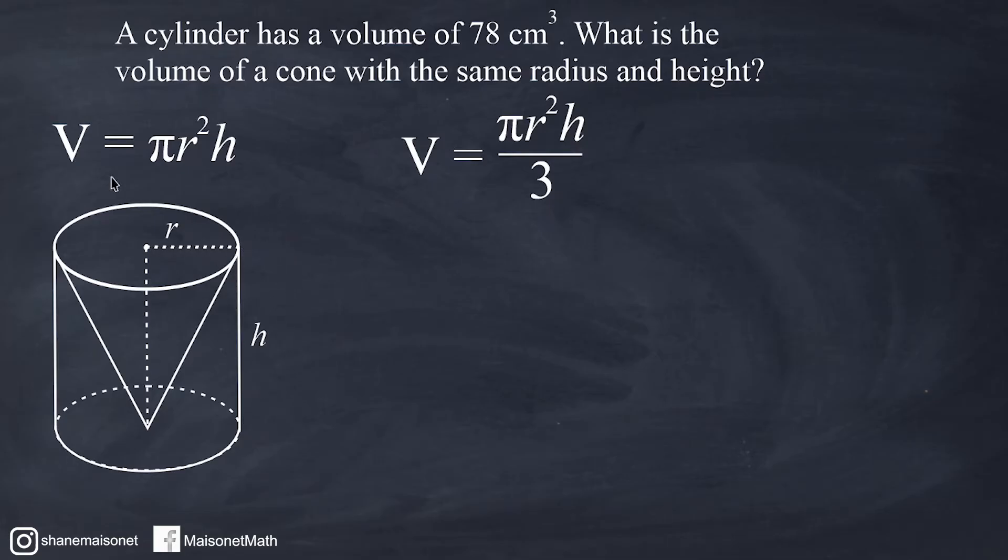If we were to fill the cone with some sort of liquid, we would notice that the capacity would be less than the capacity of the cylinder. In fact, a cone with the same radius and the same height as its cylinder would hold exactly one-third the capacity of the cylinder. So the volume formula is identical for both objects with one exception: you just take the volume of the cylinder and divide by 3.